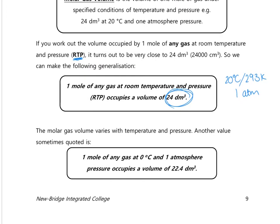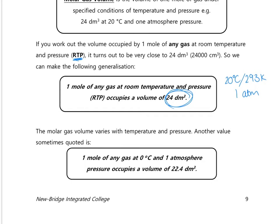Another value to be familiar with is the molar gas volume at 0°C and one atmosphere pressure, where one mole of any gas occupies 22.4 dm³. It's important not to mix up those two values: if it's room temperature and pressure, use 24; if it's 0°C, use 22.4. For any other conditions, the question will give you the molar gas volume.